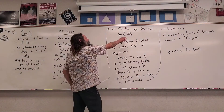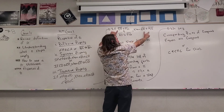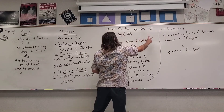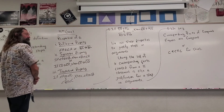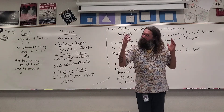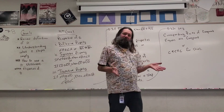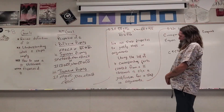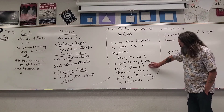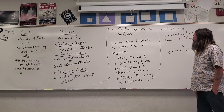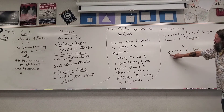We can also talk about the transitive property in terms of sides: if side DE is congruent to FG and side HI is congruent to FG, then those sides must be congruent to each other — two things congruent to the same thing must be congruent to each other. We use these properties to justify steps in arguments. Using the list of congruent corresponding parts created from a congruent statement is also a justification — we say 'corresponding parts of congruent figures are congruent,' or CPCFC for short.